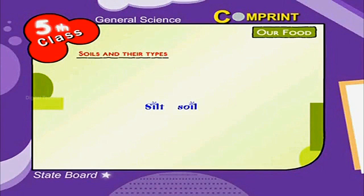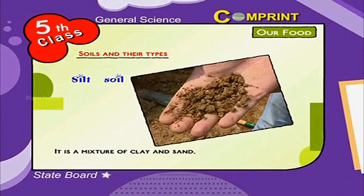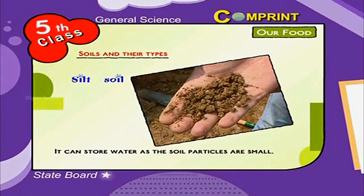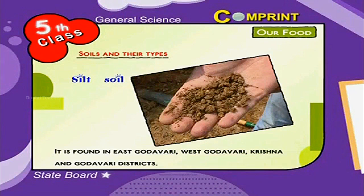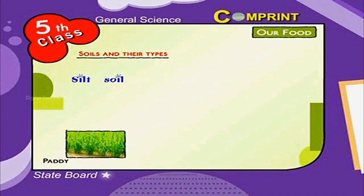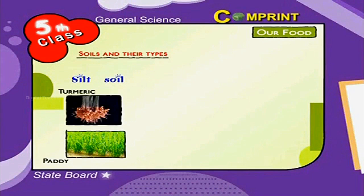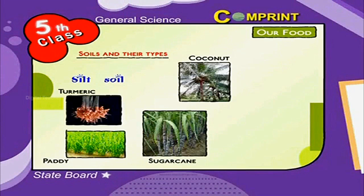Silt Soil is a mixture of clay and sand. It can store water as the soil particles are small. It is found in East Godavari, West Godavari, Krishna and Godavari districts. The crops grown in these fields are Paddy, Turmeric, Sugarcane, Coconut, and Plantain and Vegetables.